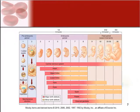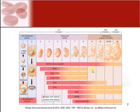Here you can see a table that lines up some of the growth to help you see what happens where. You can tell most of the development occurs in the first trimester.